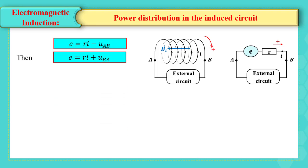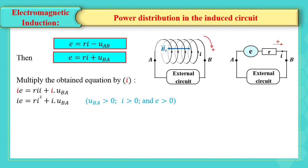If we replace UBA by UAB, the equation becomes E equals Ri plus UBA. Multiply the obtained equation by I, then the equation becomes IE equals Ri squared plus I multiplied by UBA, where UBA greater than zero, I greater than zero, and E greater than zero.